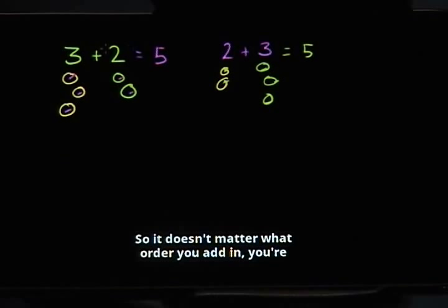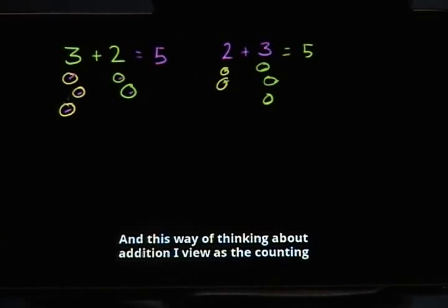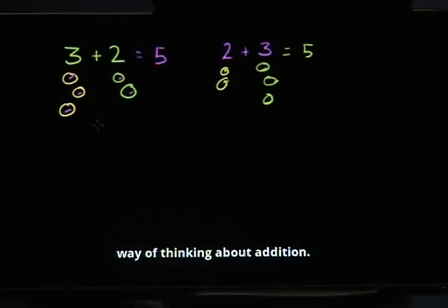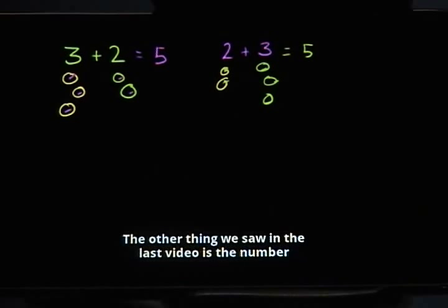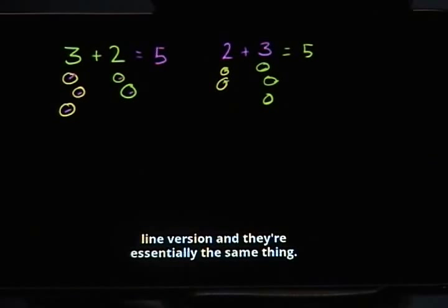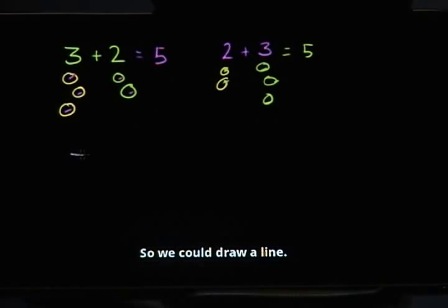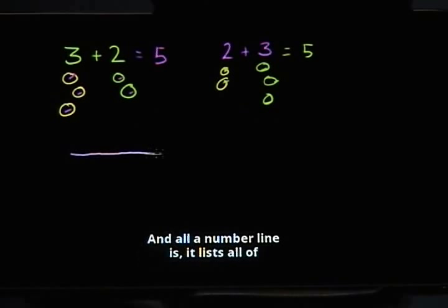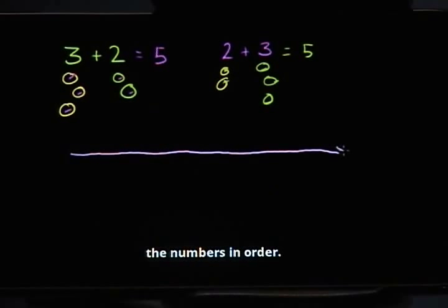So it doesn't matter what order you add in, you're still going to get 5. And this way of thinking about addition I view as the counting way of thinking about addition. The other thing we saw in the last video is a number line version, and they're essentially the same thing. So we could draw a line. All a number line is, it lists all of the numbers in order.